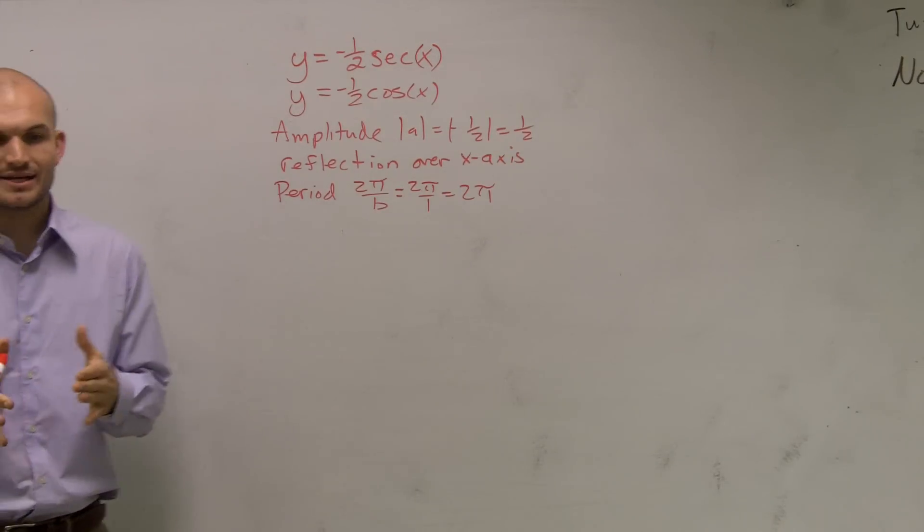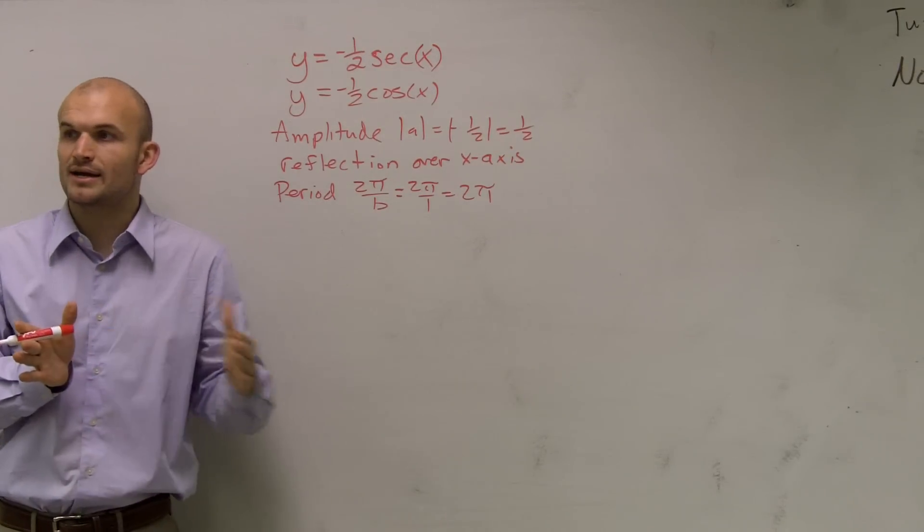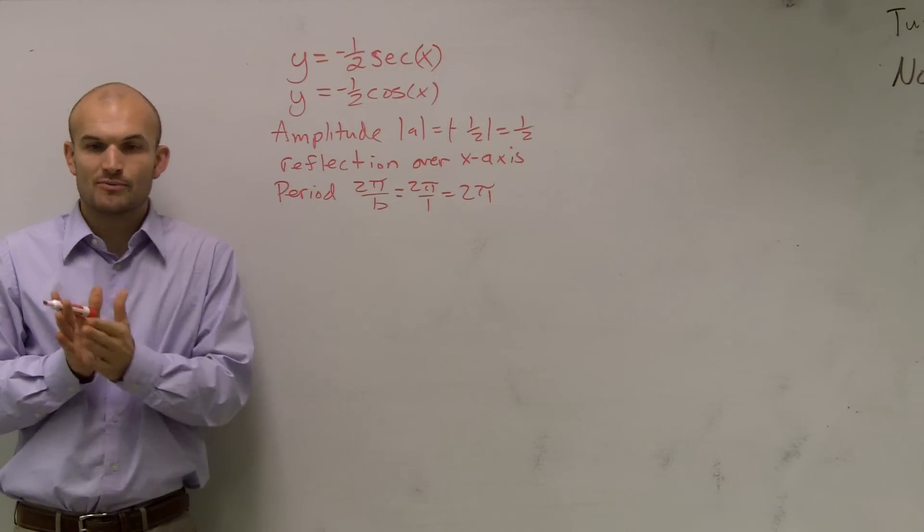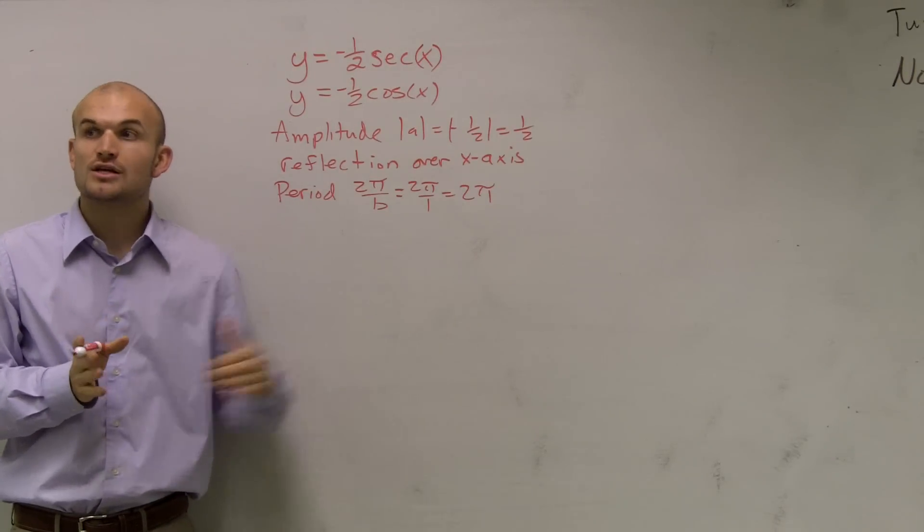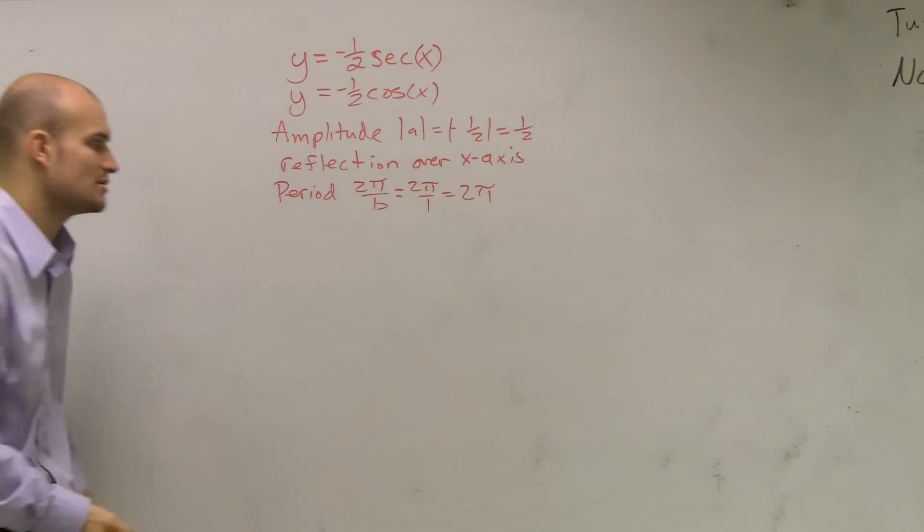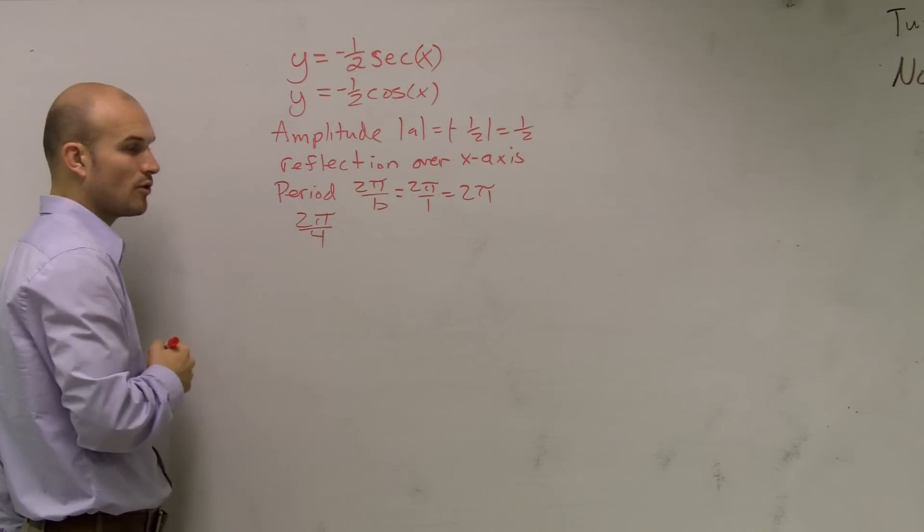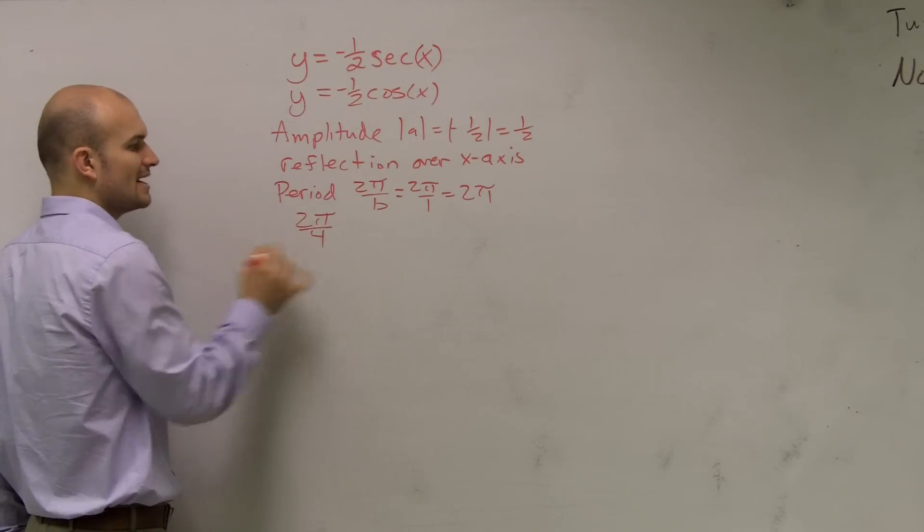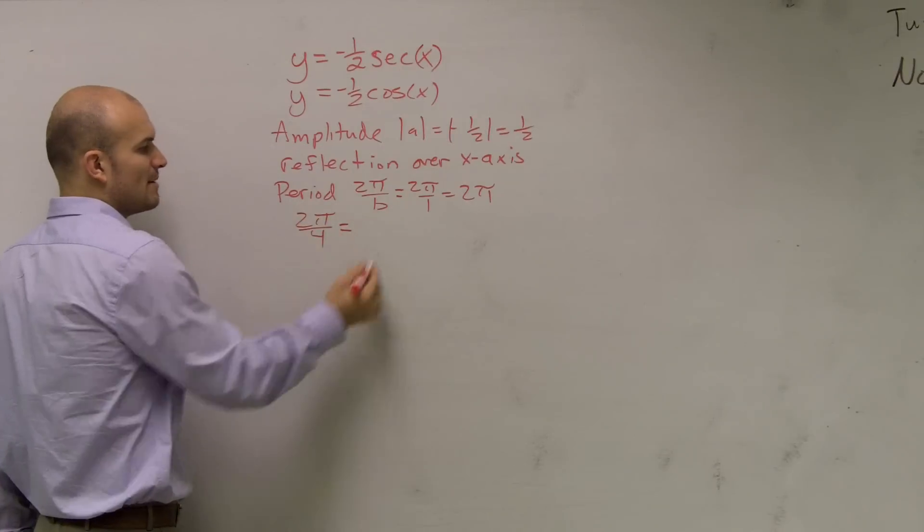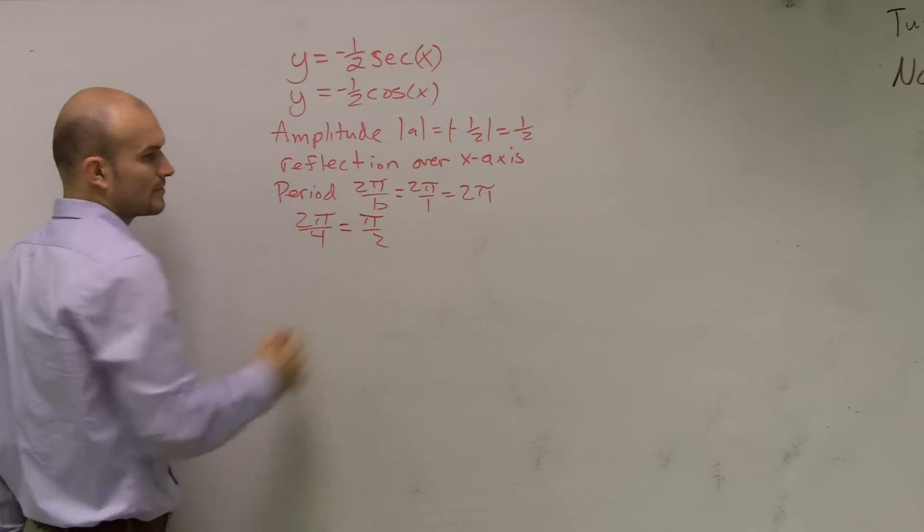Last important thing, we have intervals on a period for sine and cosine. The intervals are four even intervals. So we want to determine what the distance is between those four intervals. I'm going to take 2π divided by 4, which gives you π over 2.